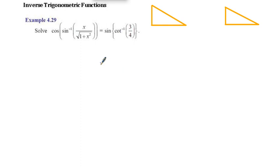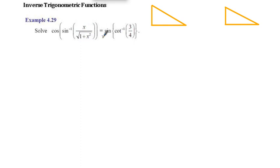Welcome to our channel. In this video, let's look at unit 4 inverse trigonometric functions, example 4.29. Solve: cos of sin inverse of x by square root of 1 plus x squared, equals sin of cot inverse of 3 by 4.